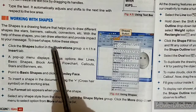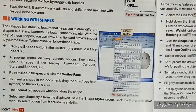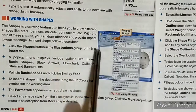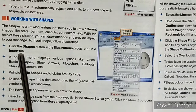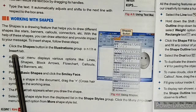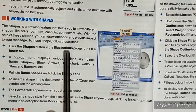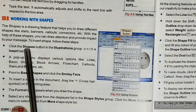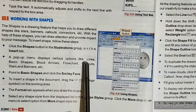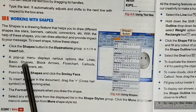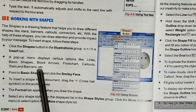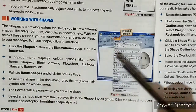To insert shapes, follow these steps. Number first, click the Shapes button in the Illustration group on the Insert tab. The pop-up menu displays various options like lines, basic shapes, block arrows, flowchart, callouts, stars and banners.